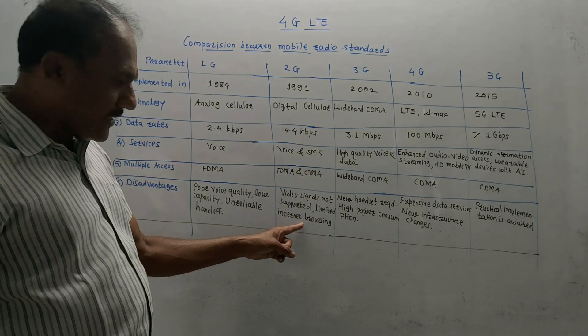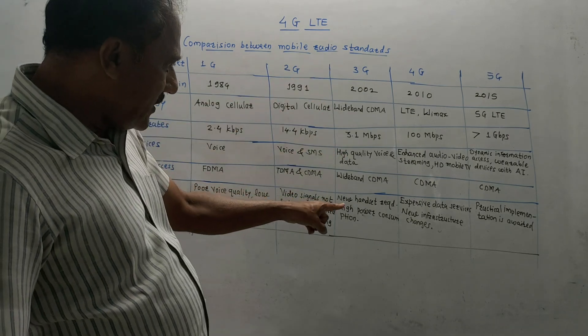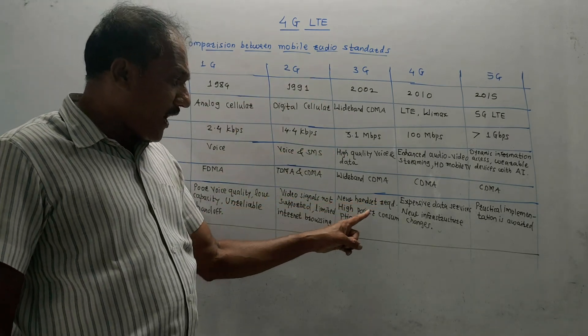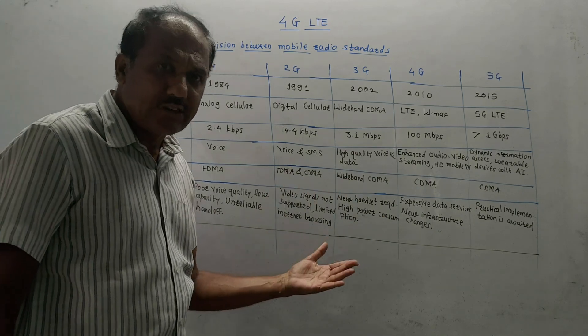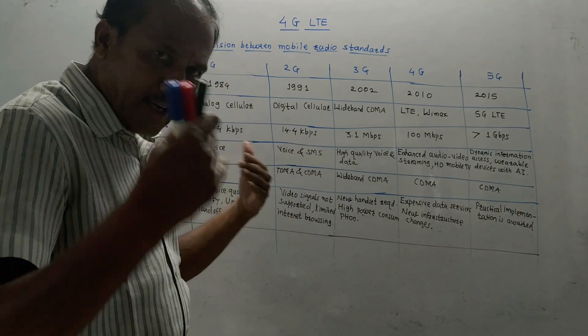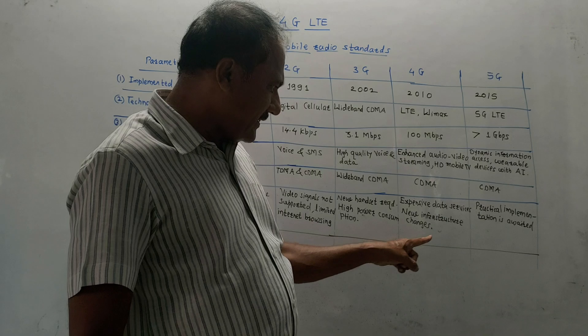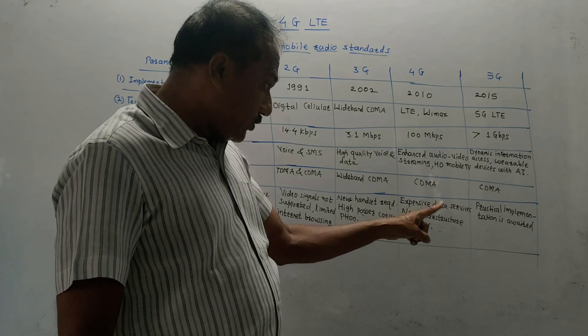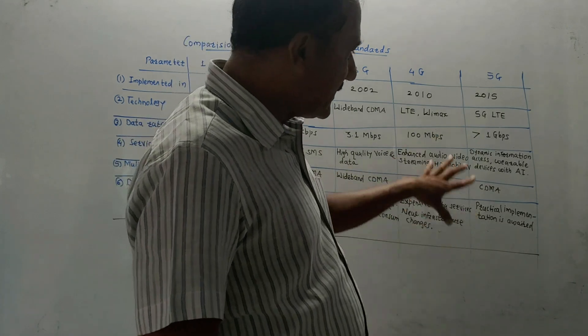Third generation: new handsets were required and there was high power consumption as far as battery was concerned, so it was required to use batteries with very high power rating. Fourth generation: expensive data services and new infrastructure changes. Fifth generation: we know that practical implementation is still awaited.